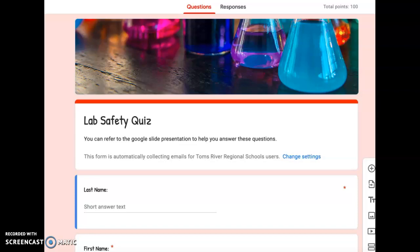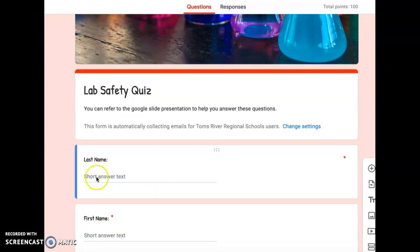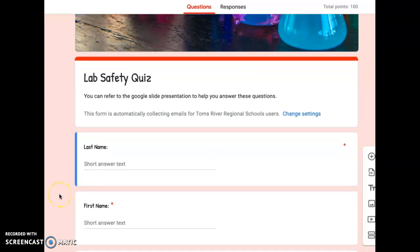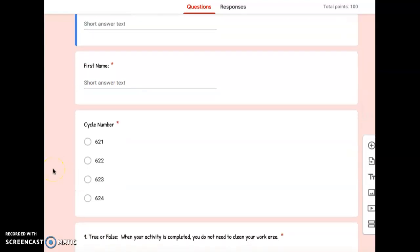Lab safety quiz. You can refer to the Google Slide presentation to help you answer these questions. First, type your last name in the box here. Next, type your first name in the box here. You will now select your cycle number.